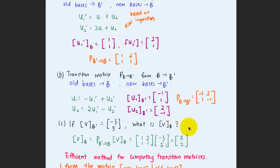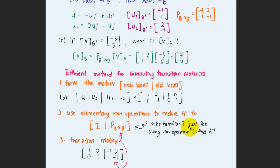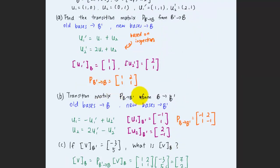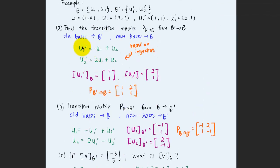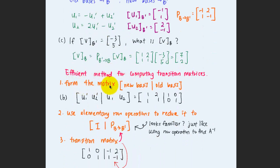There is a more efficient method for computing the transition matrix instead of solving by inspection, because in more complicated cases it is almost impossible to deduce the connection between old and new bases. The efficient way is to form an augmented matrix with the new basis vectors on the left-hand side and the old basis vectors on the right-hand side — placing u1 prime, u2 prime, u1, u2 side by side as column vectors. Then use elementary row operations to reduce the left side to the identity matrix; the remaining matrix on the right-hand side will be the transition matrix. This method is similar to the row operation used to find the inverse of a matrix.